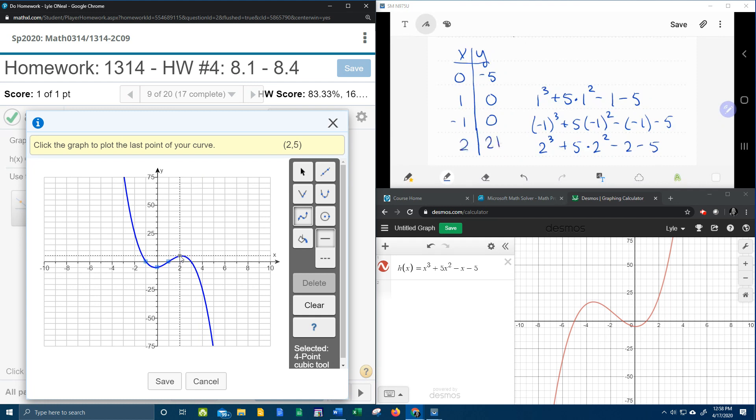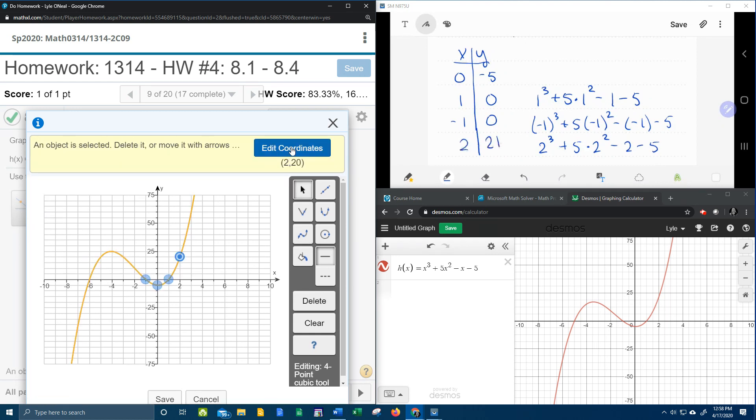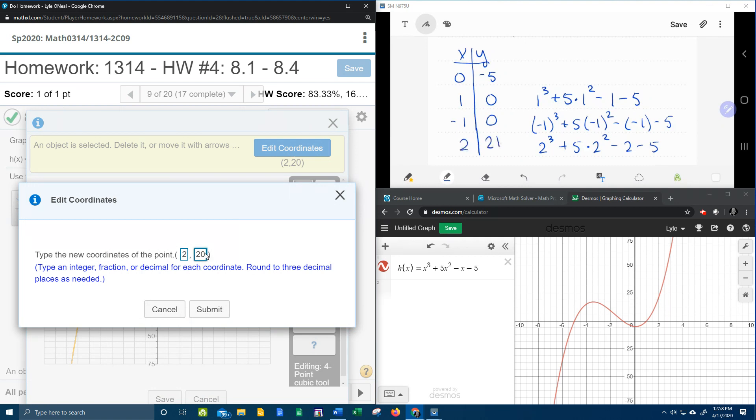And two is up at 21. So how can I input that point if I can't actually get there? Let's see. Is there a way to plot that point without actually being able to get there? Edit coordinates. There we go. Two, 21. Submit.